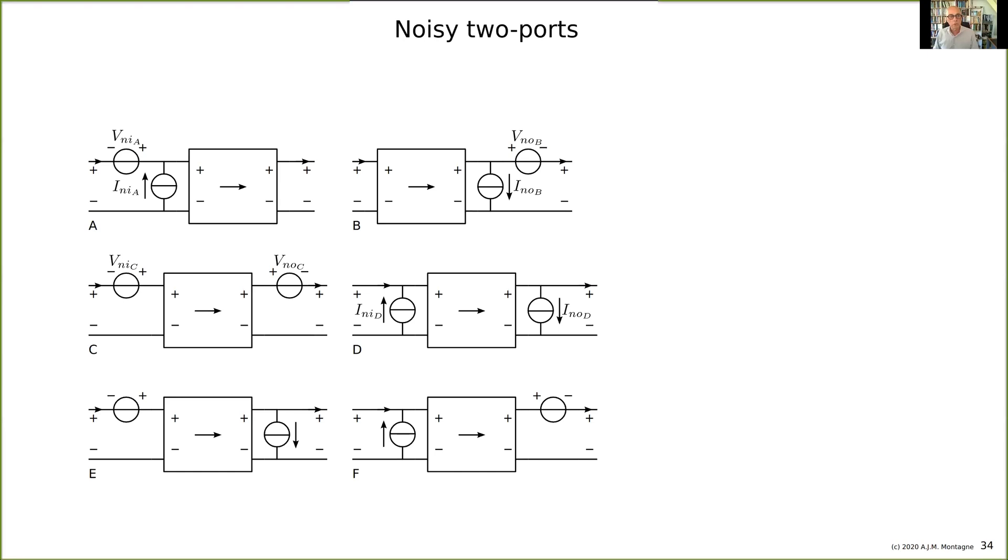More interesting, what is a useful model for us? What is a model that helps us with designing? I will show you that there are six ways of modeling it. Here you see six ways because basically we have two independent variables and two dependent variables, so the network is completely defined if you have two noise sources added.